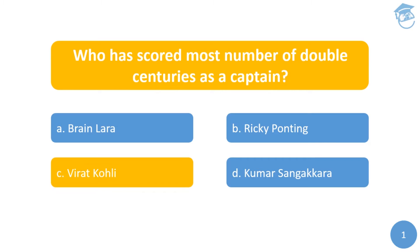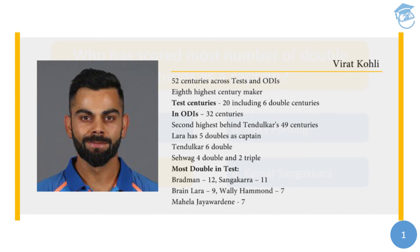The answer is Virat Kohli. With six double centuries as a captain, Virat Kohli stands out. Overall he has scored 52 centuries across Test and ODI, and in the list of highest century makers he is at the eighth position. This includes 20 Test centuries including six double centuries and 32 ODI centuries. In ODI he is only second to the Master Blaster Sachin Tendulkar who has 49 centuries. Lara has five double centuries as captain and Tendulkar had six double centuries but not as captain.